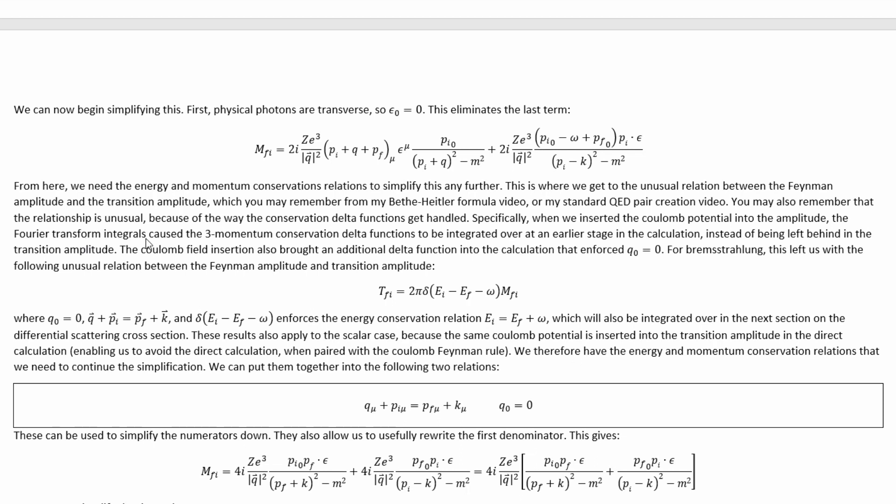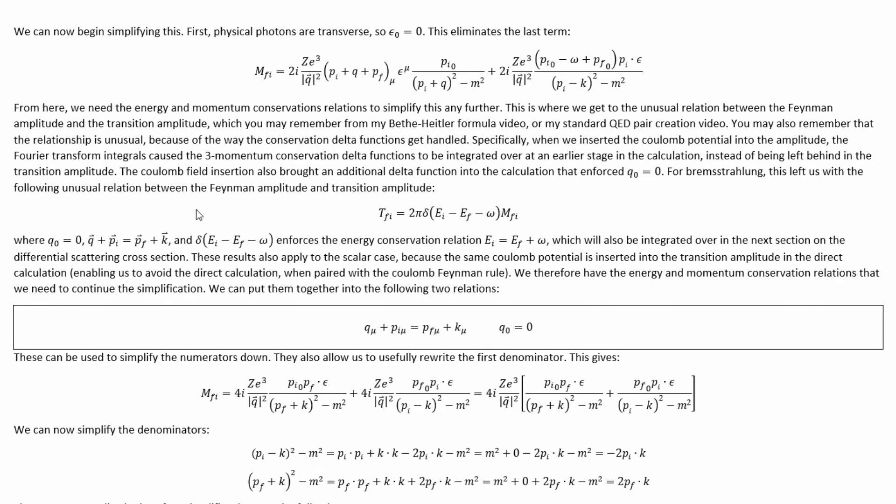the Fourier transform integrals cause the three momentum conservation delta functions to be integrated over at an earlier stage in the calculation instead of being left behind in the transition amplitude. The Coulomb field insertion also brought an additional delta function into the calculation which enforced this relation. For bremsstrahlung, this left us with the following unusual relationship between the Feynman amplitude and the transition amplitude. Where Q_0 equals zero, we have this mechanical momentum conservation relation from that integration that's done sooner than usual, as I was talking about, and this enforces energy conservation. And that energy conservation delta function will be integrated over in the next section when we handle the differential scattering cross-section.